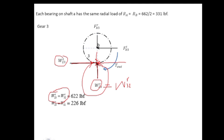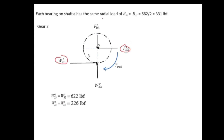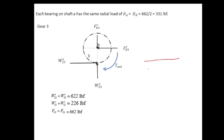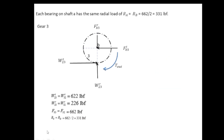From equilibrium on shaft B, the reaction force components equal the applied forces. The resultant force on shaft B is: fb3 = √(fb3t² + fb3r²). Since fb3t = w23t = w32t = 622 lbf and fb3r = w23r = w32r = 226 lbf, the resultant is the same as shaft A: fb3 = 662 lbf. This is shared equally by bearings C and D, so each bearing carries 331 lbf.